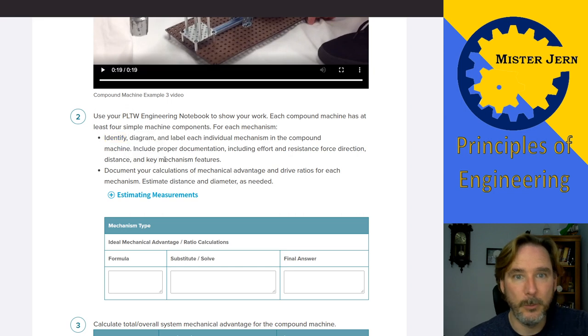identify what it is. Okay, so you're going to identify it. This is a gear, okay? A gear train, I guess, gear train. Then you draw a diagram of that, whatever it is, gear train, lever, whatever. Okay, so identify what it is, label it what it is, diagram it what it is, and then label each individual mechanism in the compound machine.